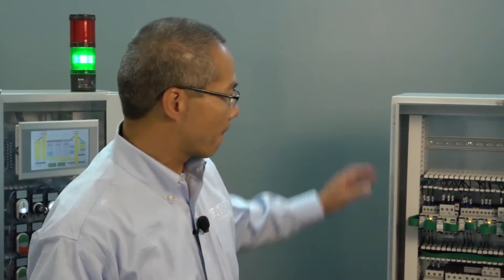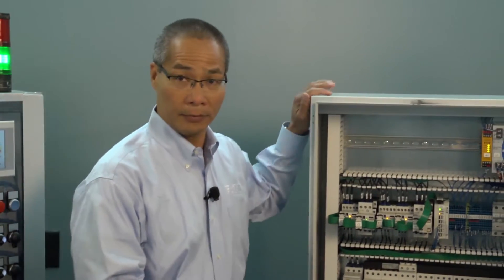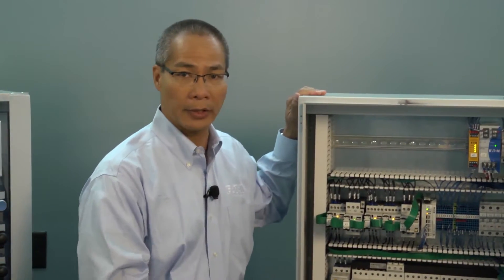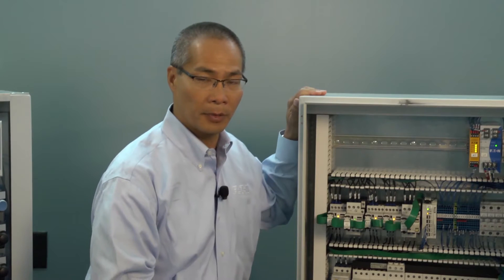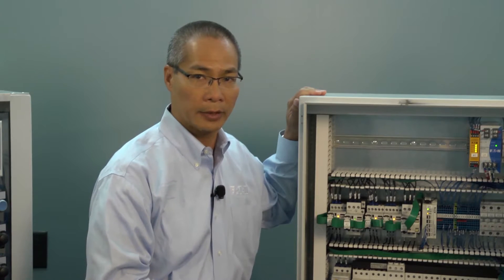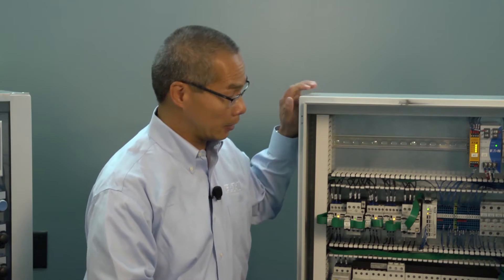Next, I'd like to show you what our lean connectivity solution looks like with SmartWire DT. Take a look at this panel. The first thing you'll notice is there's a big space where the conventional PLC was located, and I'll explain that in a minute.